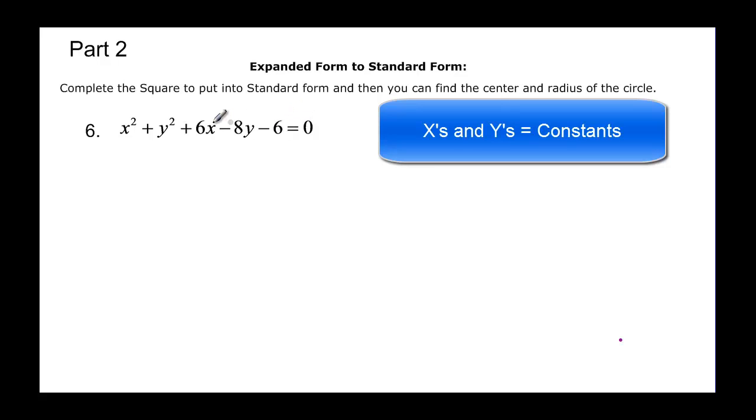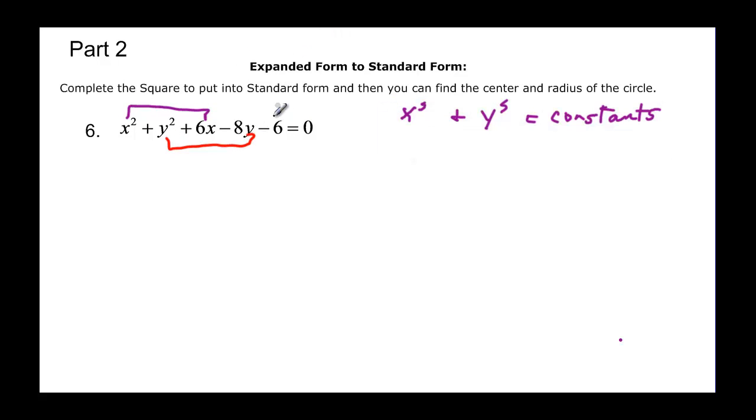So we need to take the 6 and put it to the other side, and then I need to group these two things together. So we have x squared plus 6x, and then we have plus y squared minus 8y, and that's going to be equal to positive 6.